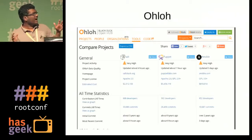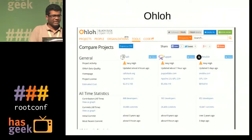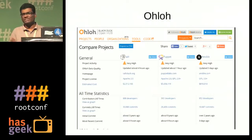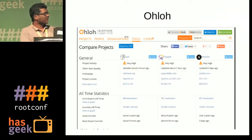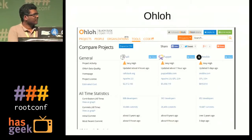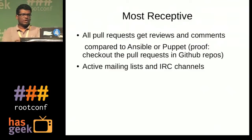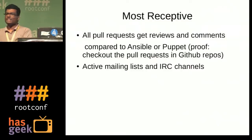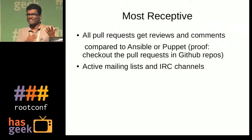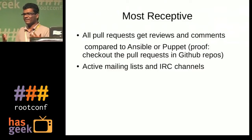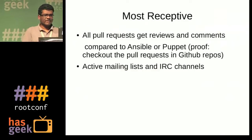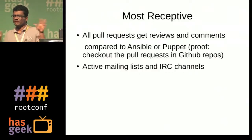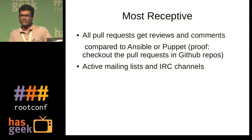Ansible and Puppet have almost the same kind of activity, but compared to Puppet, SaltStack has fewer developers — almost half — and fewer comments overall. Even though SaltStack is about a three-year-old project versus Puppet being a nine-year-old project, it's a very receptive community. All pull requests sent to GitHub get reviewed. I'm making this comparison with similar tools like Puppet or Ansible just to give you an idea — you can go to their GitHub repositories and check pull requests to see how many people are commenting.